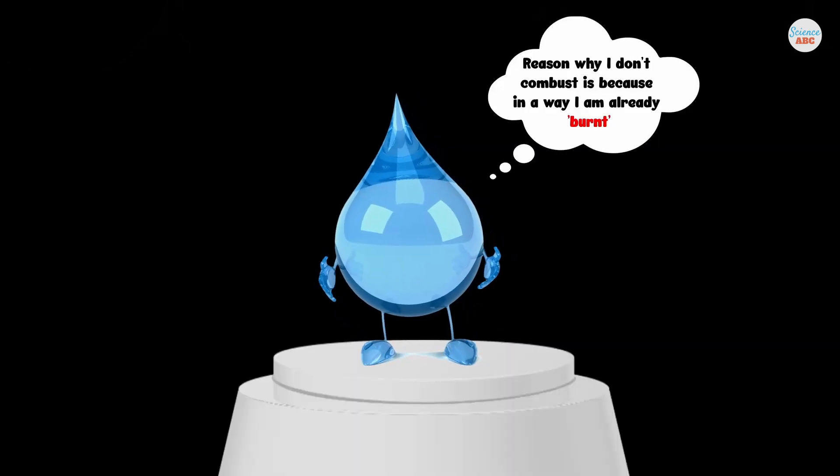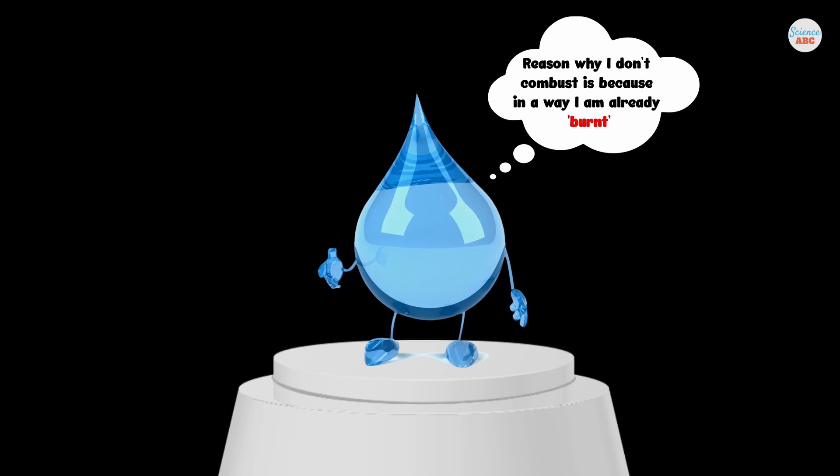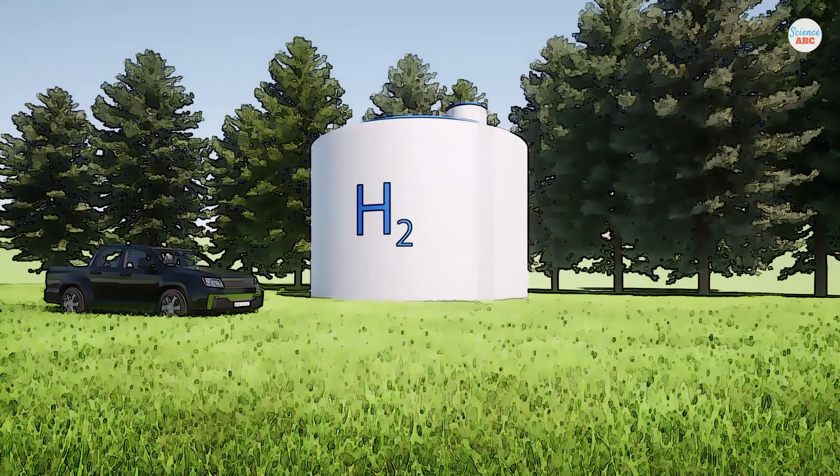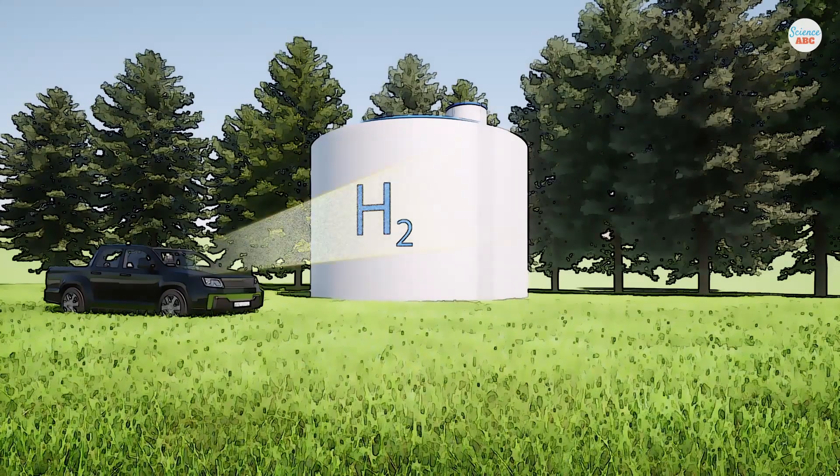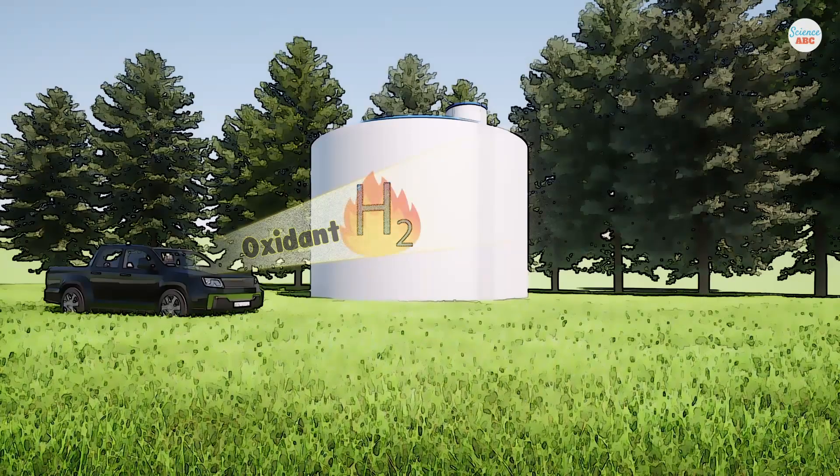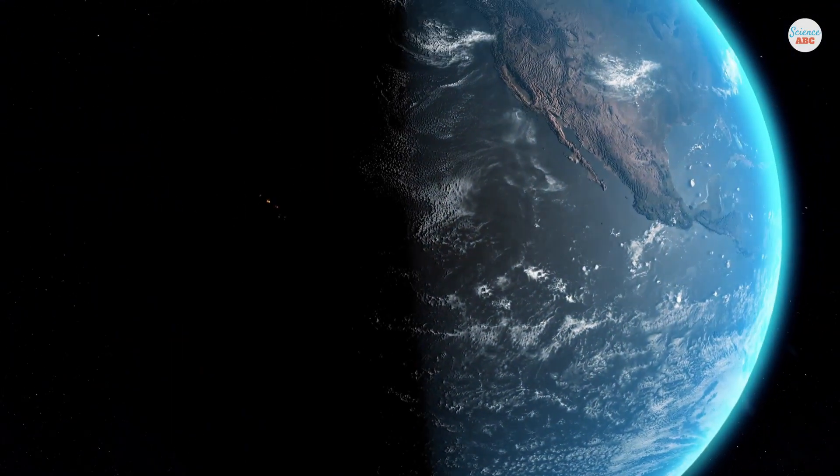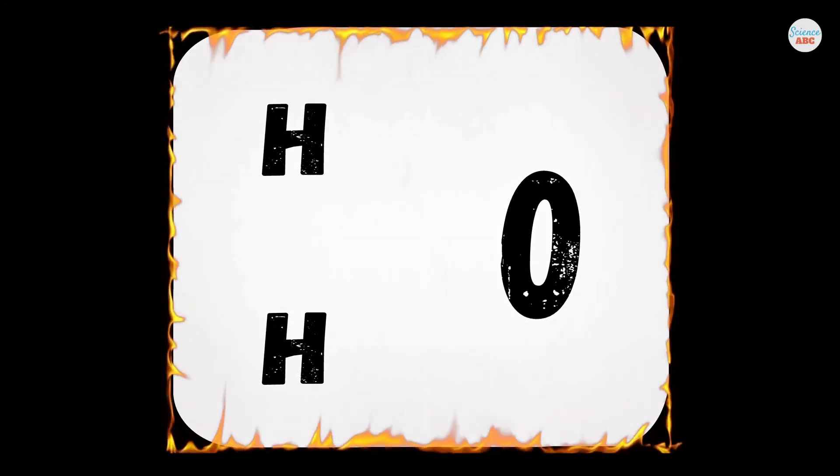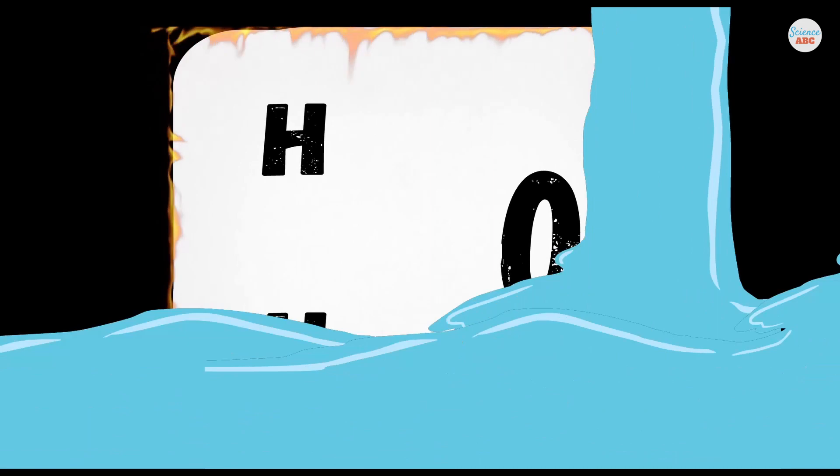The stability of water is because water is already burnt. As we have discussed, hydrogen gas is highly flammable. All it needs is an oxidant to start burning. Since oxygen is the most abundant oxidant on Earth, it rapidly combines with hydrogen atoms to catch fire, if you will. The product of that fire is water.